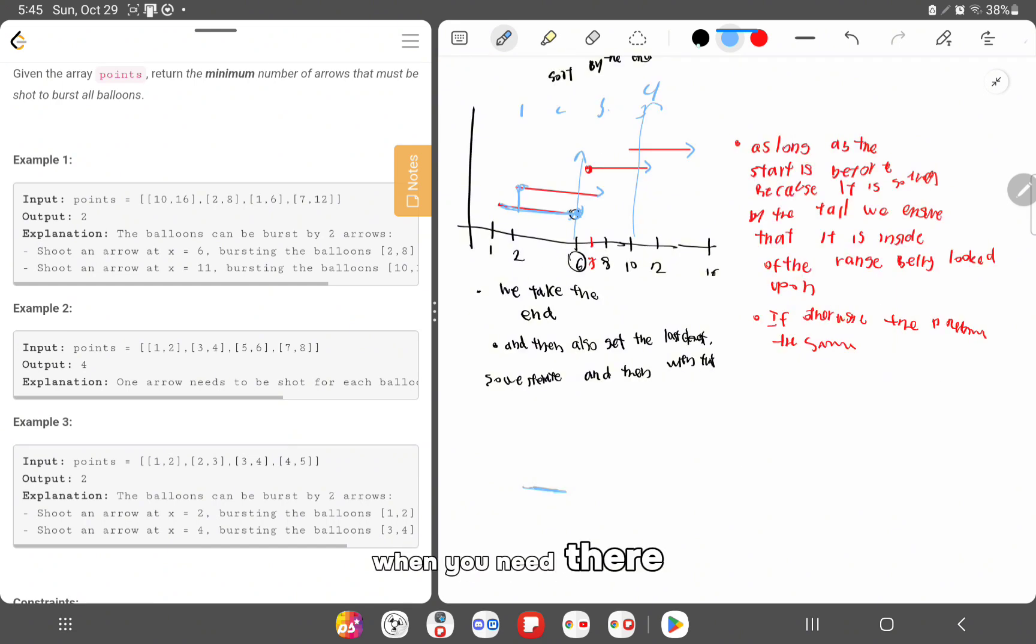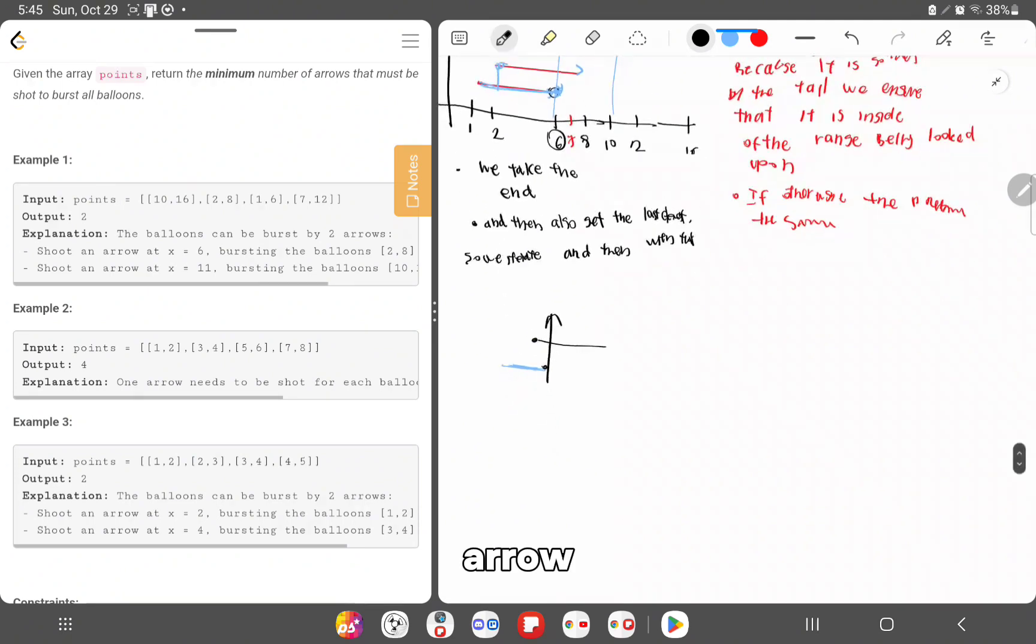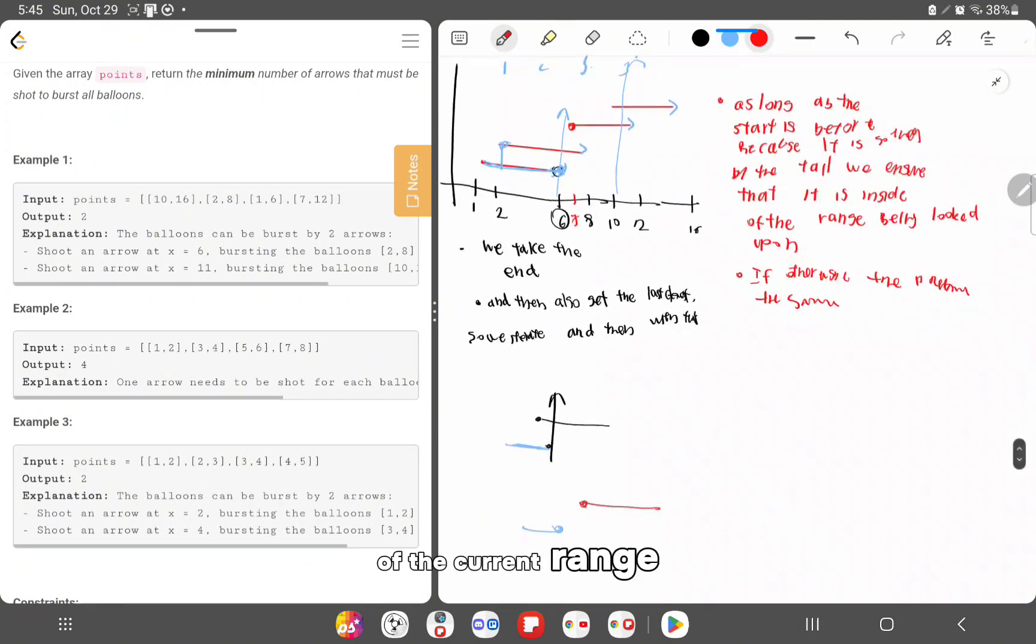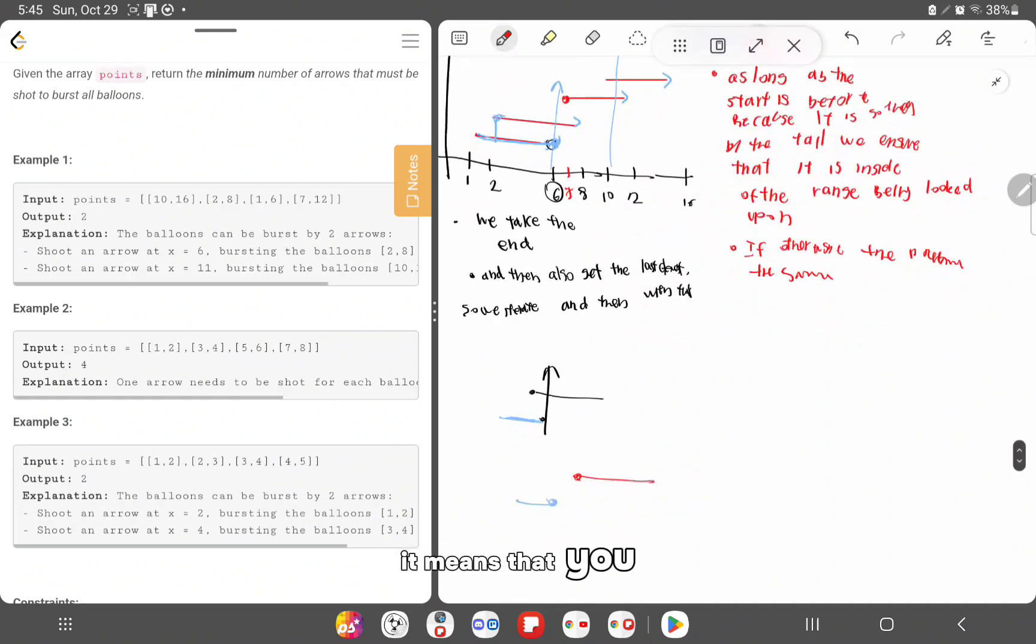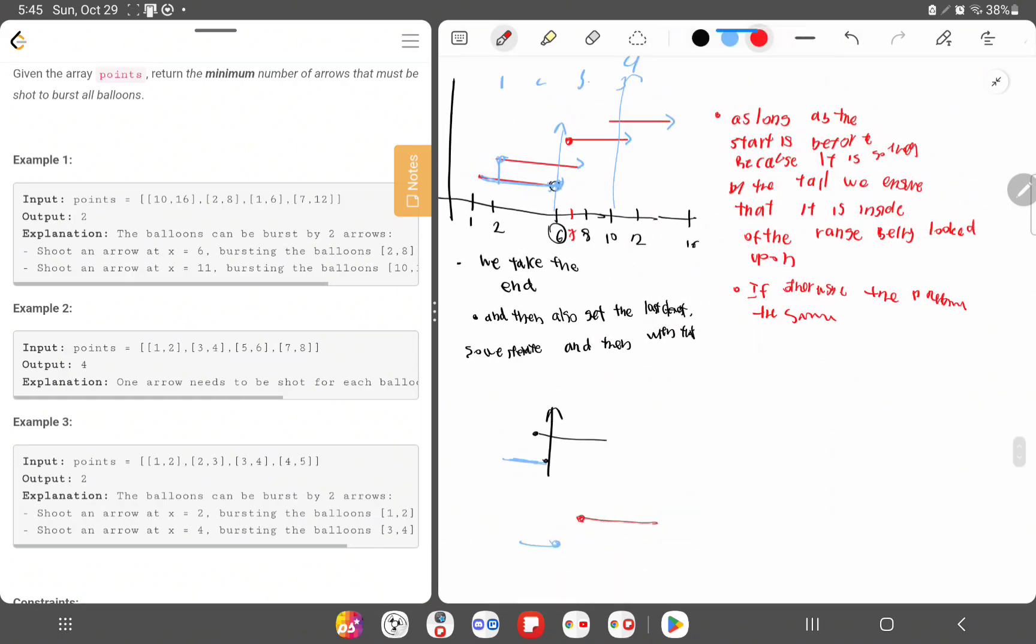There are two cases. So if this is inside of the previous range, then it means that it can be exploded using the same arrow. But if this is outside of the current range or the end range, it means that you need a different arrow to explode this.